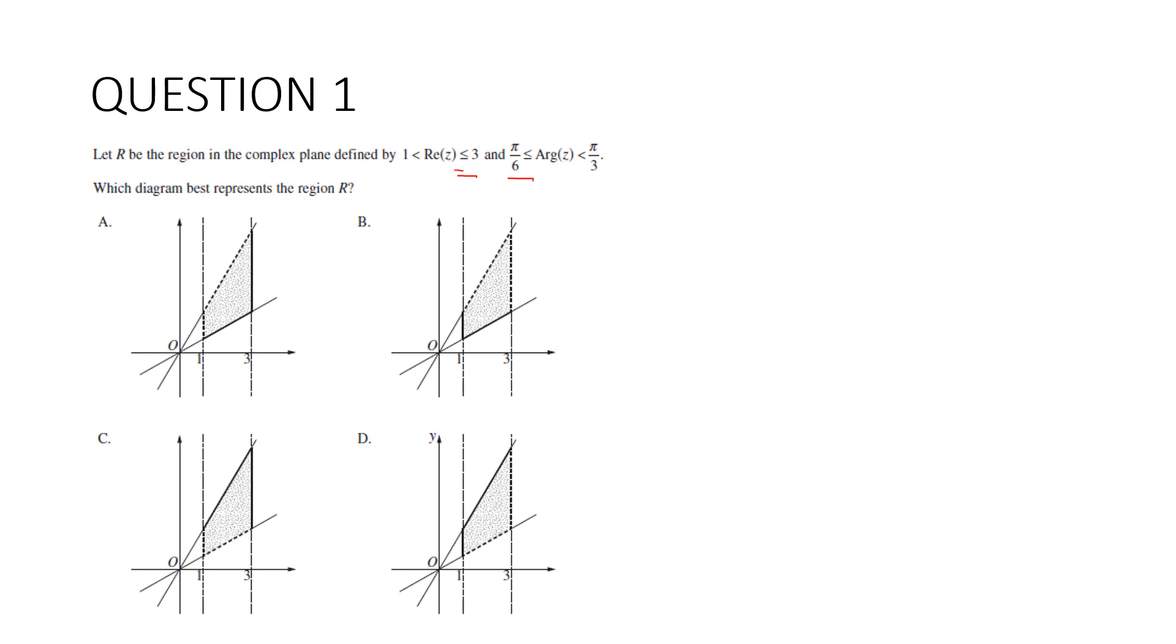We want a solid line at x equals 3, which means D is out and B is out, and we want a dotted line at 1. Then we want a solid line at π/6, which is here, and C is out, so the answer is A.